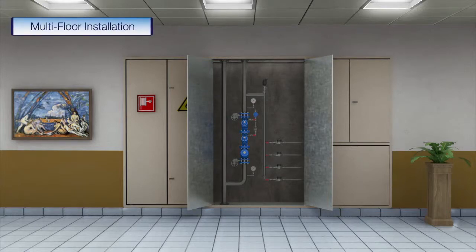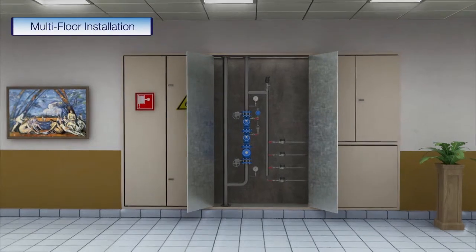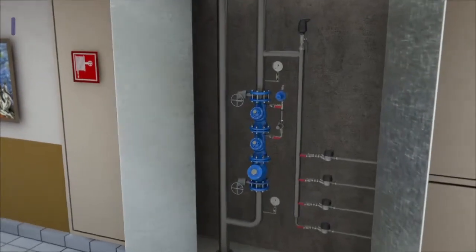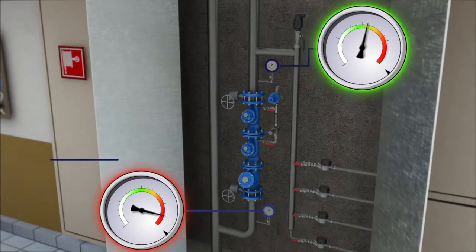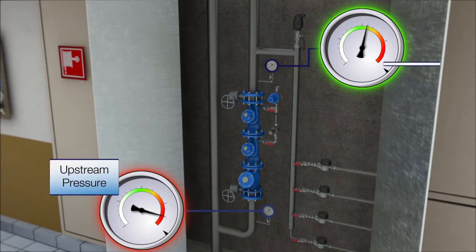The water system of this building has several pressure zones. The water is gravitating down from the rooftop to the middle floors in higher pressure than the maximum allowed. Therefore, it is controlled by Bermad's pressure reducing system.